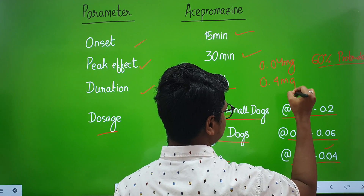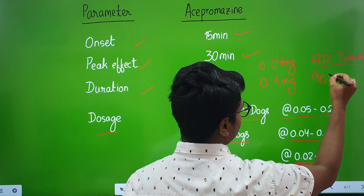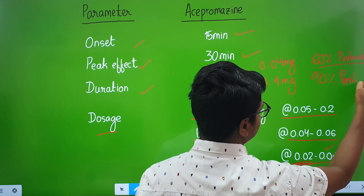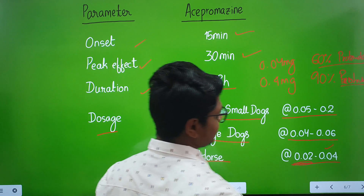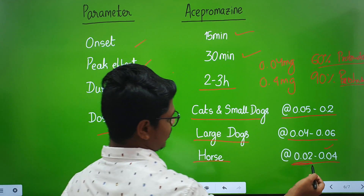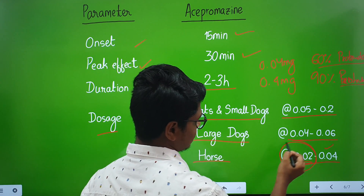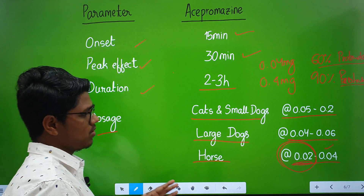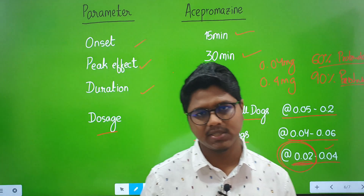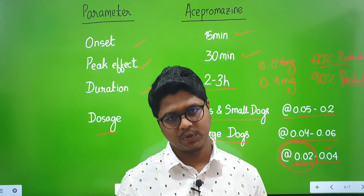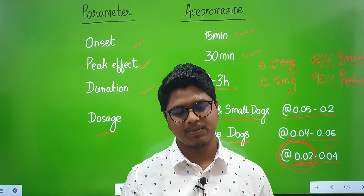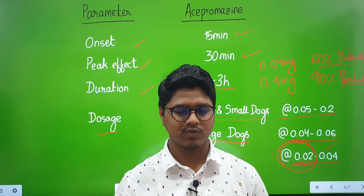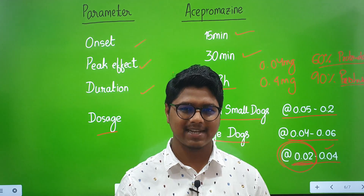At 0.4 mg/kg in horses, 90% penile protrusion was reported — so the protrusion is dose-dependent. When using acepromazine in horses, use a lesser dose or combine with an opioid to minimize penile protrusion. That covers the phenothiazines. Next class we will go over the butyrophenones. If you like this video, please subscribe and share with your friends, juniors, or colleagues. See you in the next class.